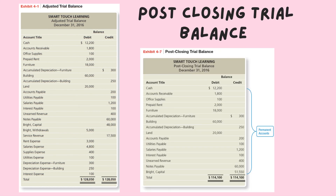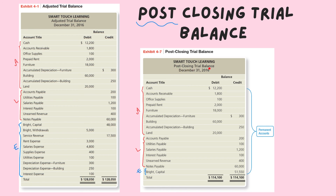To prepare the post-closing trial balance, after closing revenues, expenses, and withdrawals and transferring the balances to the only permanent equity account which is capital, revenues, expenses, and withdrawals are closed and their balances become equal to zero. So the post-closing trial balance is going to include assets, liabilities, and instead of those accounts, you're going to have only the capital after closing, which is $51,550. This is the new balance after the closing process. These are the permanent accounts.